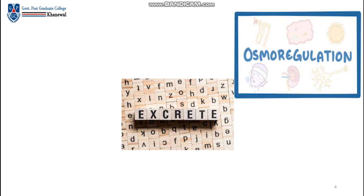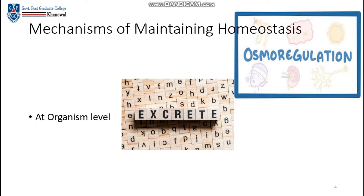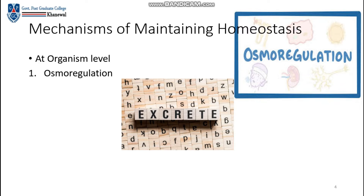Next, mechanisms of maintaining homeostasis. There are two levels. At organism level, what happens: osmoregulation, excretion and thermoregulation. Osmoregulation basically deals with solutes and water balance. Excretion refers to removal of wasteful products from the body. Thermoregulation is basically temperature balance and regulation.